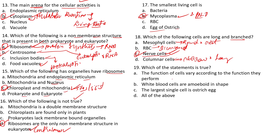Question 19: Which of the following statements is true? A: Functions of cells vary according to size. B: White blood cells are amoeboid in shape. C: Largest single cell is the ostrich egg. D: All of the above. The right answer is D: all of the above. Functions of cells vary according to size and shape; WBCs are amoeboid in shape; and the largest single cell is the ostrich egg.